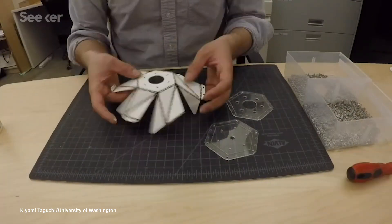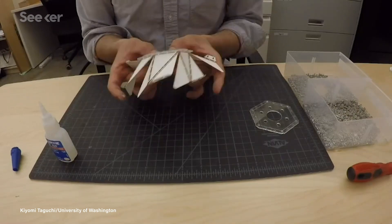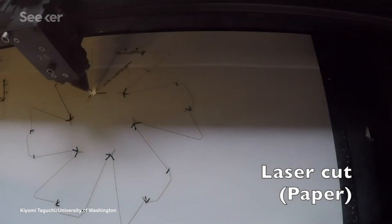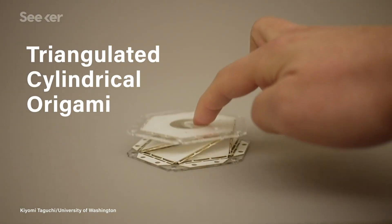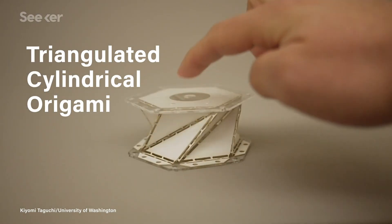In this case, these aeronautical engineers created a beautiful modular structure using shapes they call TCOs. Poetic, I know. That stands for Triangulated Cylindrical Origami, which makes sense when you look at their shape.